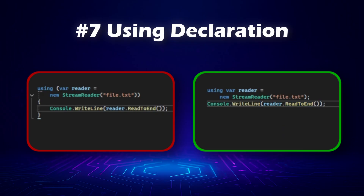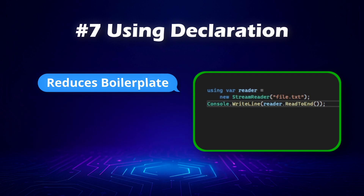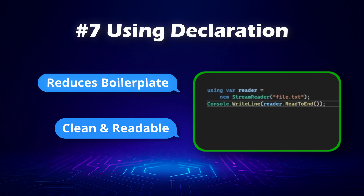So why is this version better? First, it reduces boilerplate — no extra braces or indentation are needed. It also keeps the code cleaner and easier to read while still automatically disposing the object. And when you have multiple disposables, you can declare them in a row without nested blocks, keeping your code flat and readable.